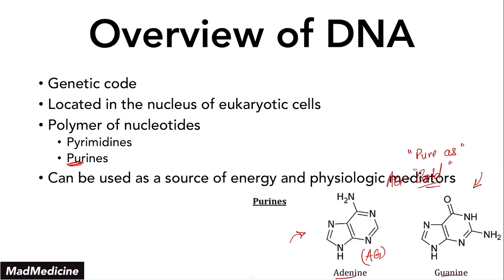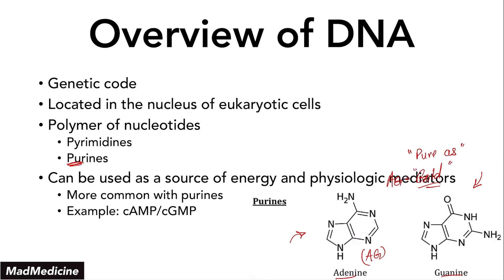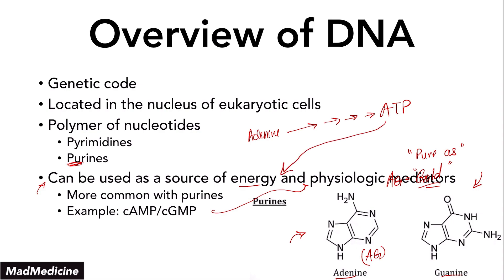DNA itself can actually be used as a source of energy, especially in physiologic mediators. It's more common with purines. An example of this is cyclic AMP and cyclic GMP — these are used as physiologic mediators. Adenine can be converted downstream into ATP, adenine triphosphate. That's energy. You just add three phosphate groups to the molecule and you'll get ATP.